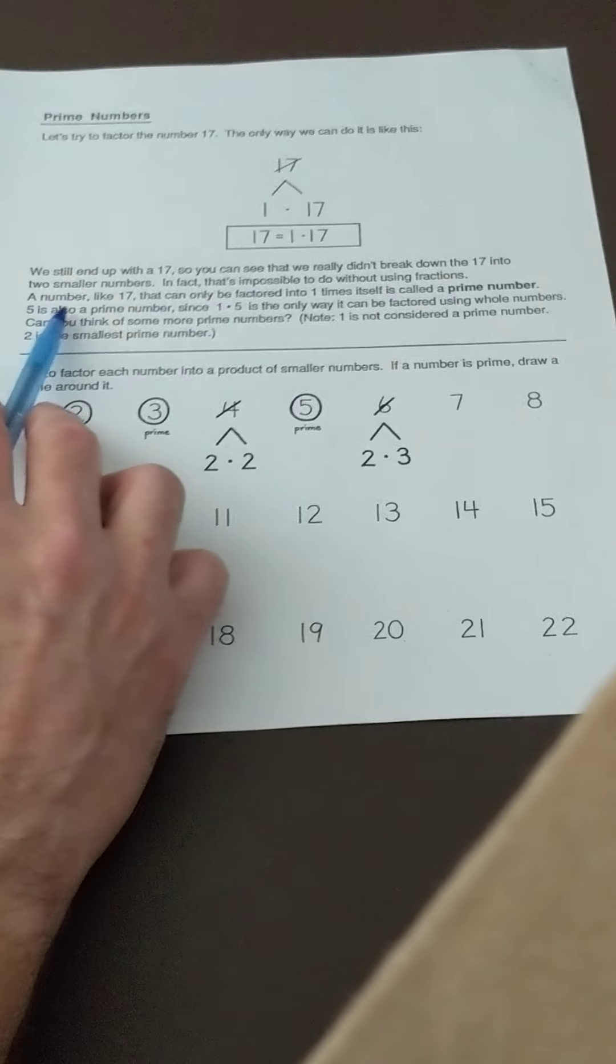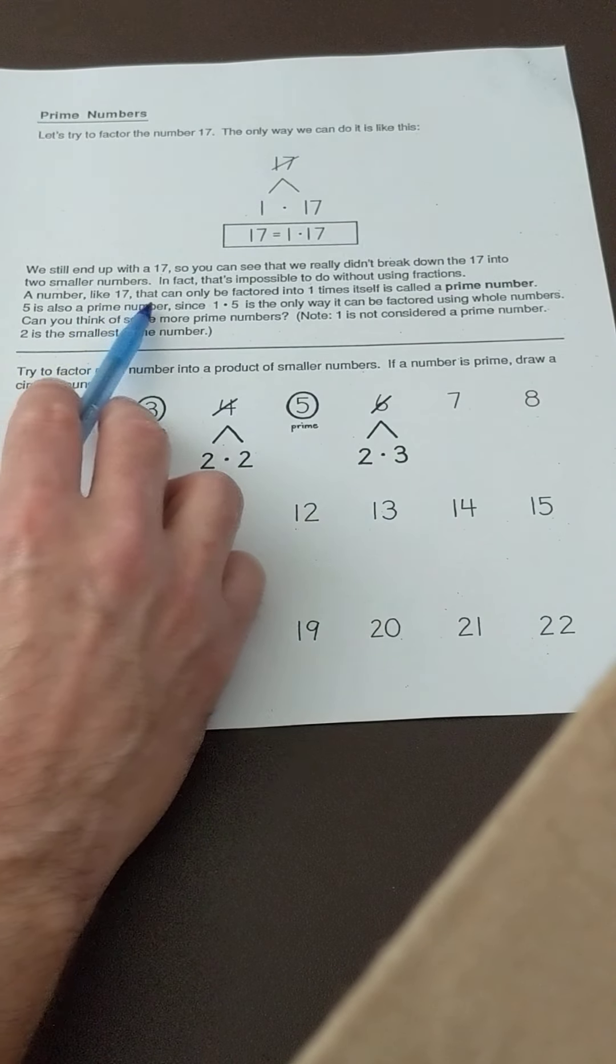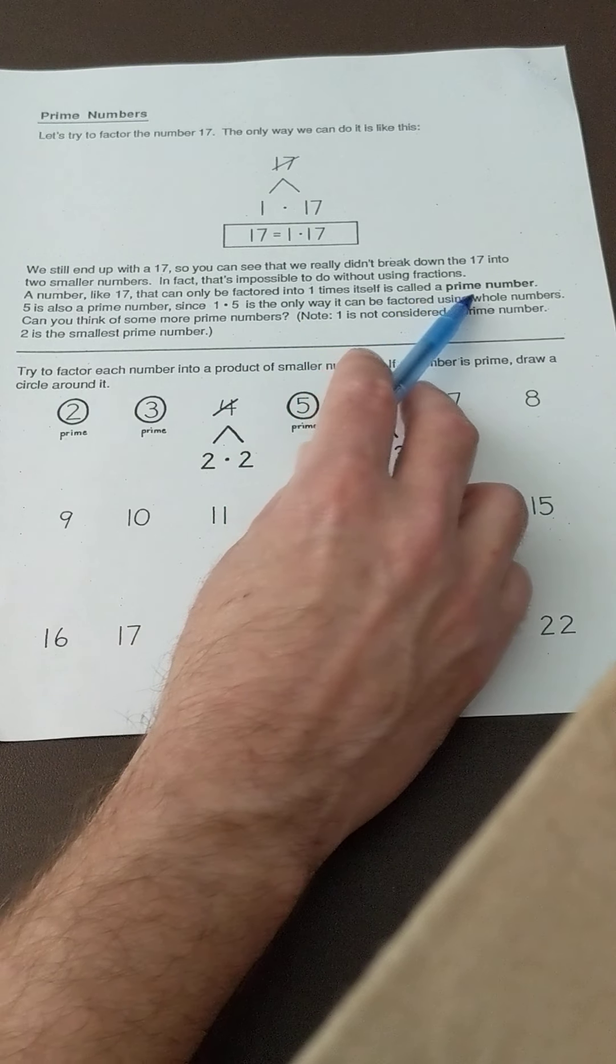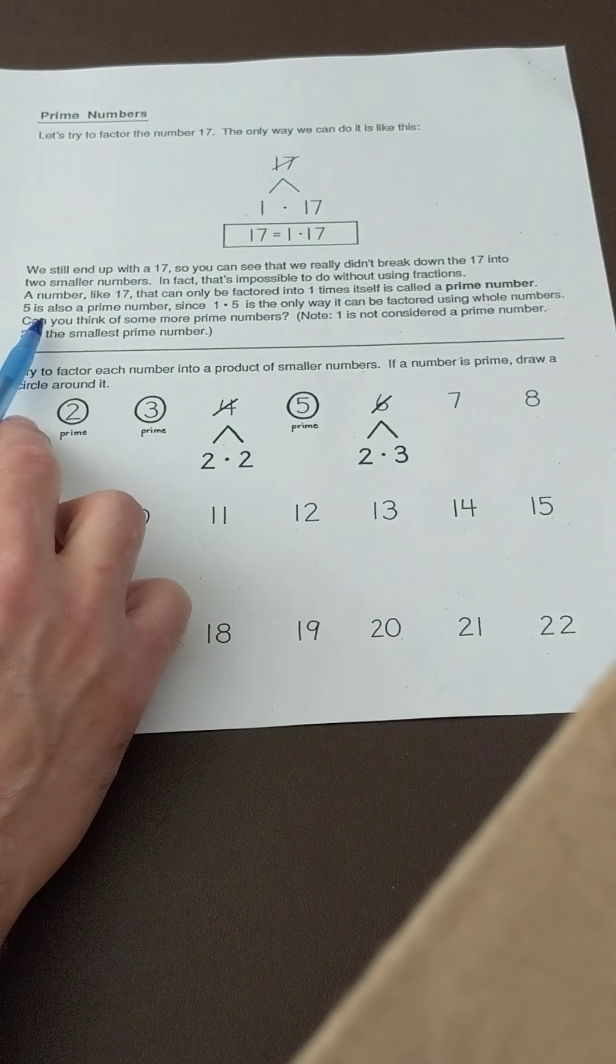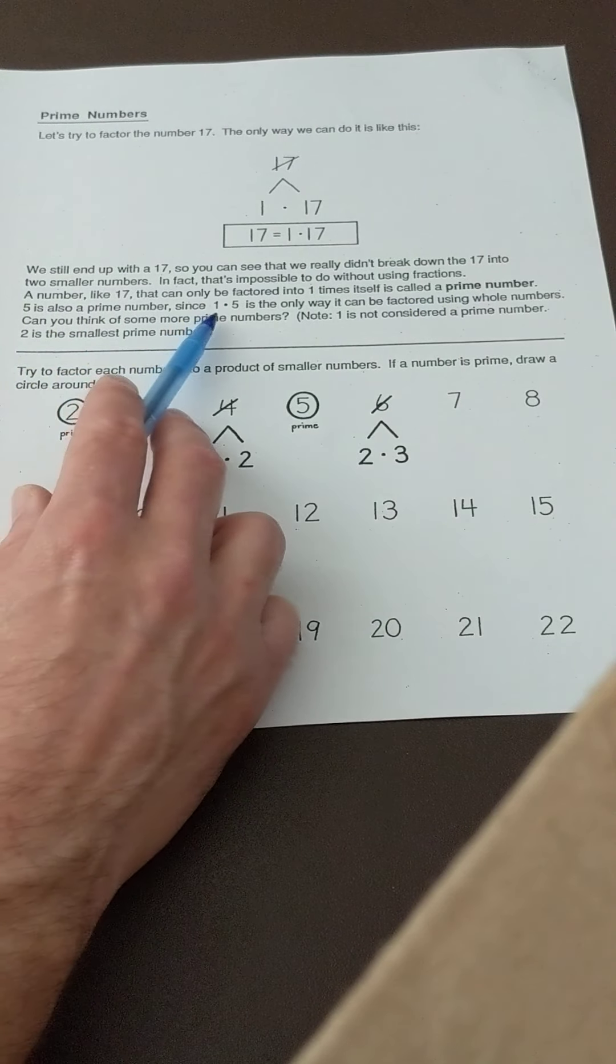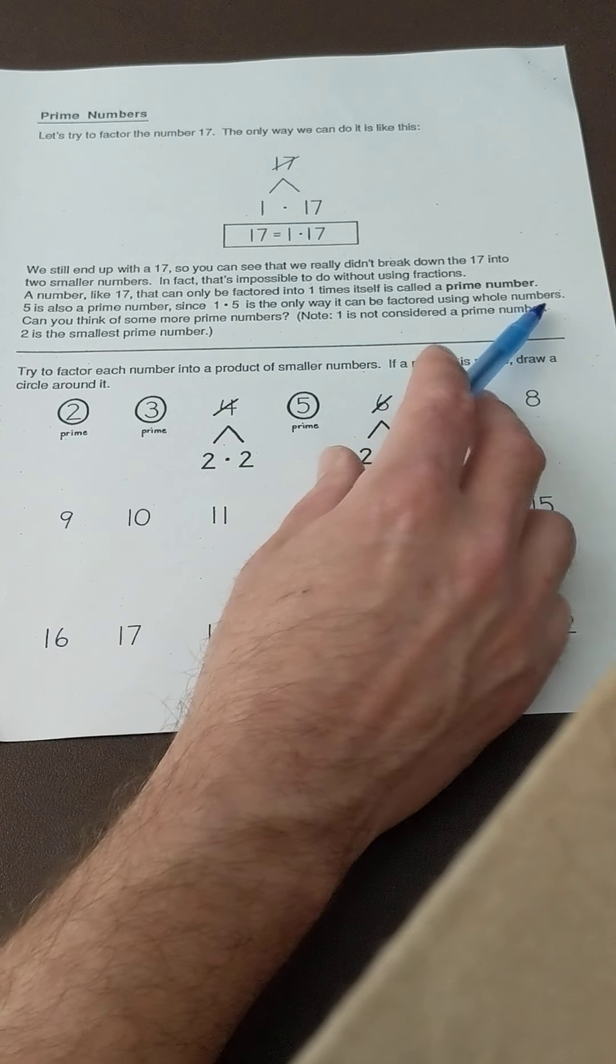A number like 17 that can only be factored into 1 times itself is called a prime number. 5 is also a prime number since 1 times 5 is the only way it can be factored using whole numbers.